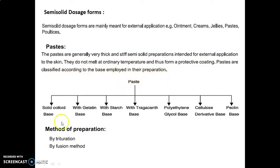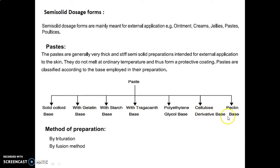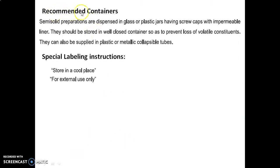Pastes are classified according to the base employed in their preparation. The classifications include solid colloid base, gelatin base, starch base, tragacanth base, polyethylene glycol base, cellulose derivative base, and pectin base. Methods of preparation of paste are by trituration method and by fusion method.